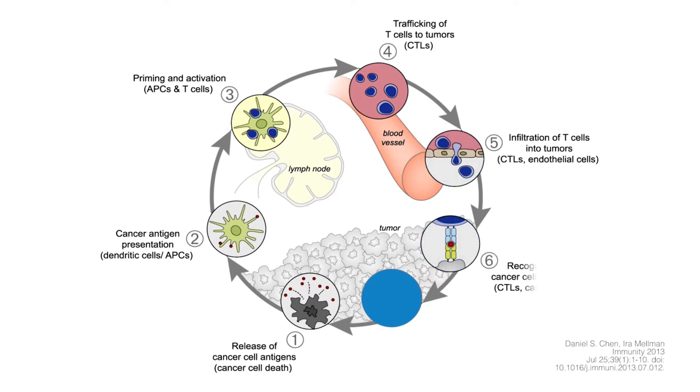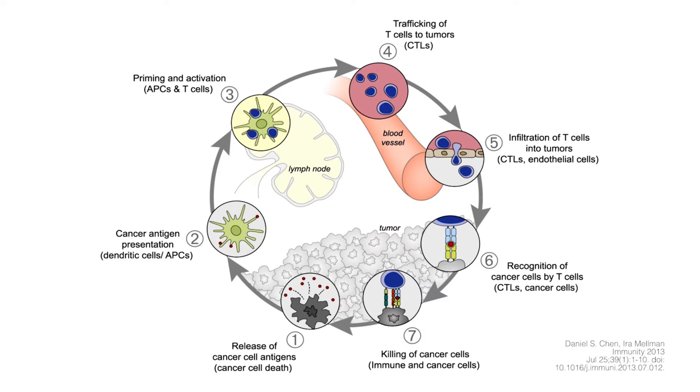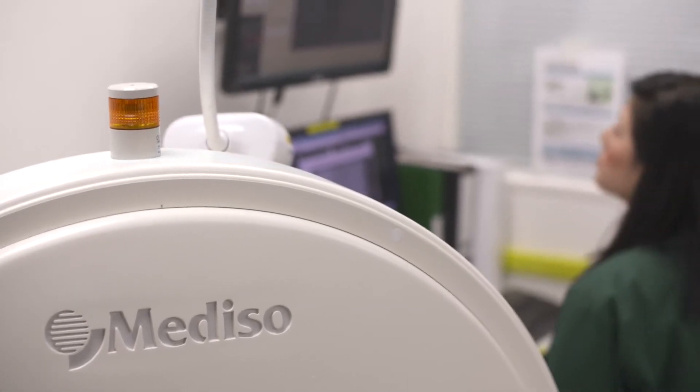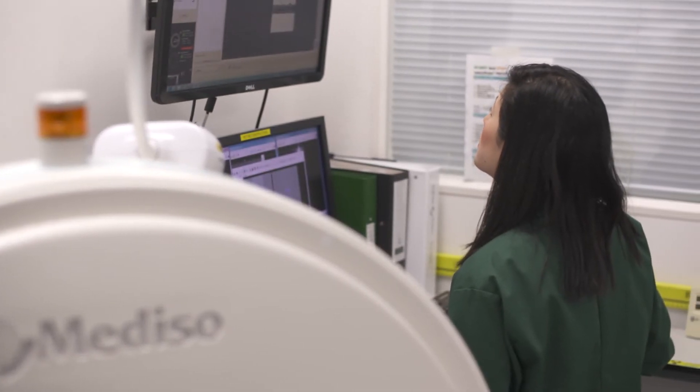Lastly, immune cells can traffic to the effector site, such as tumors or infectious sites. Here we can address questions of trafficking of immune cells to the target organs and to the tumor, their persistence, their activation at the tumor site, their effector function, and ultimately imaging can predict the response to therapies. There is a large variety of targets that can be assessed by imaging — for example, in cancer it can be on the tumor, in the microenvironment, or it can be immune components of the whole immune system.